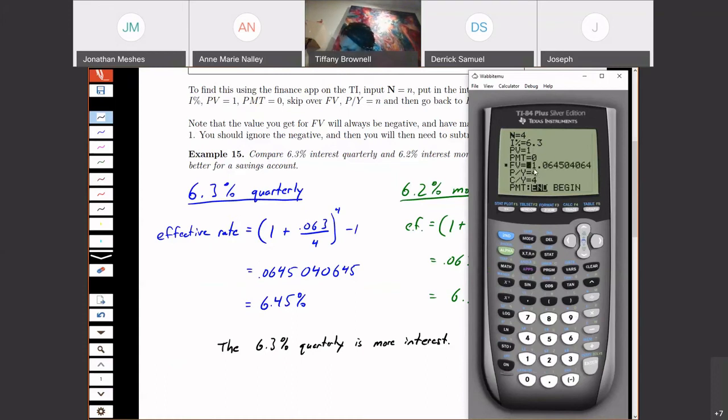So then what I end up with is $1.0645. So if I just subtract off the dollar I started with, it sort of gives me what the percentage increase is. So what I would do if I want to use my calculator to do this is when I look at my final value, I have to ignore or take away a one from that final value. And that will give me my interest. I'll get the same 6.4504 that we had.